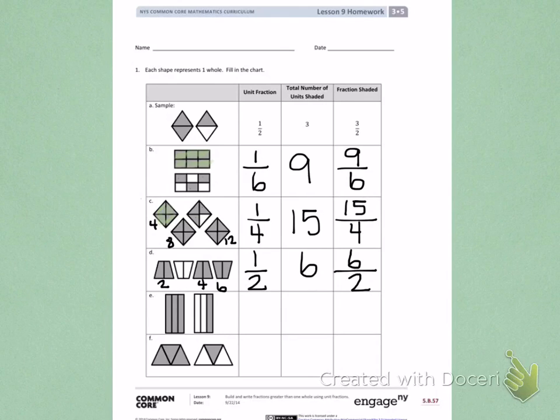Continue this same process for E and F, first writing the unit form, then counting how many parts are shaded, and finally writing the fraction for what part is shaded.